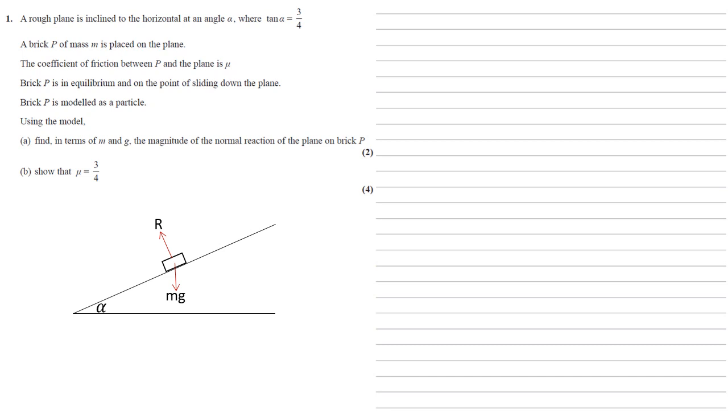As the brick is on the point of sliding down the plane, our friction force is going to be going up the plane. And we call this one mu, the coefficient of friction, times by R.